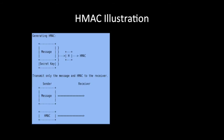Looking at a HMAC illustration, we have two components: a plain text message and a secret key. When we combine these two, we produce a hash message and create an HMAC. The sender transmits both the message and the HMAC to the receiver.